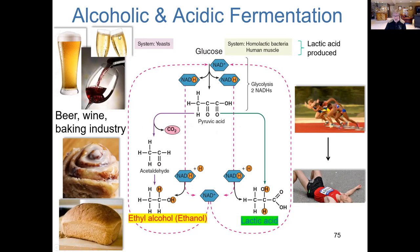Bacteria undergo this process as well, sometimes if there's no oxygen. But be careful — this is anaerobic in the sense there's no oxygen, but don't mix it up with anaerobic respiration. The other type of fermentation is acidic fermentation. We're going to focus our attention on what occurs in skeletal muscle and in certain bacteria called homolactic bacteria that undergo this type of acidic fermentation.